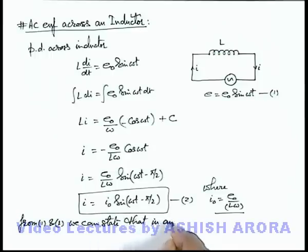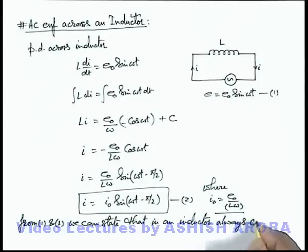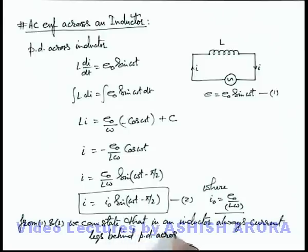Always, current lags behind potential difference across it by an angle π/2.